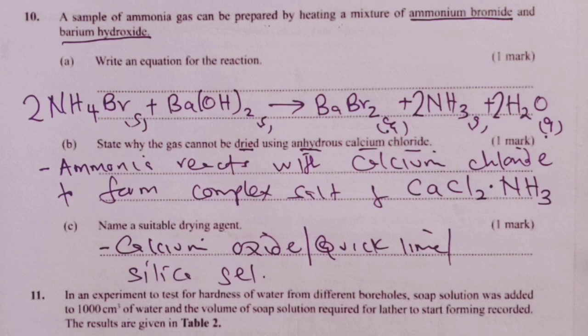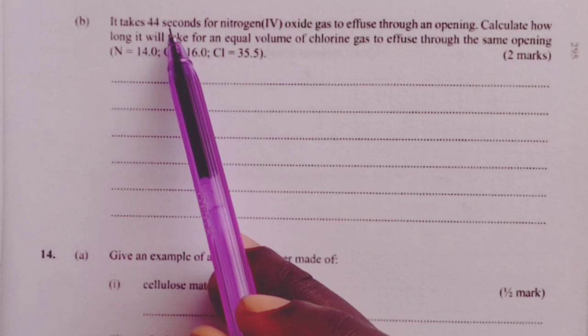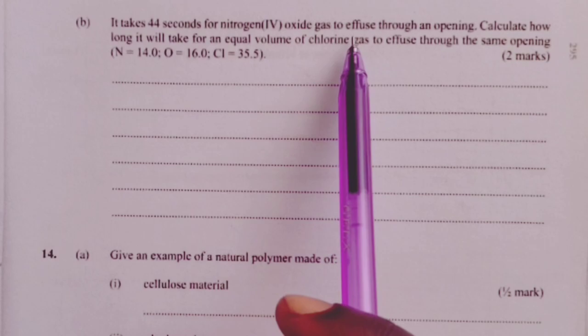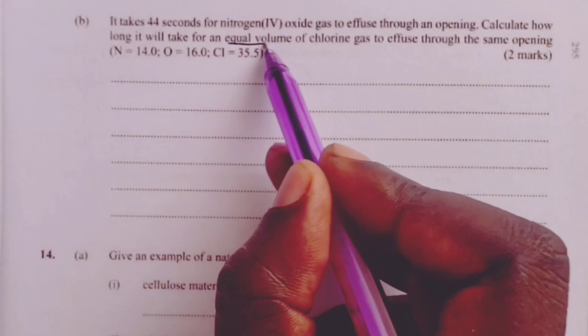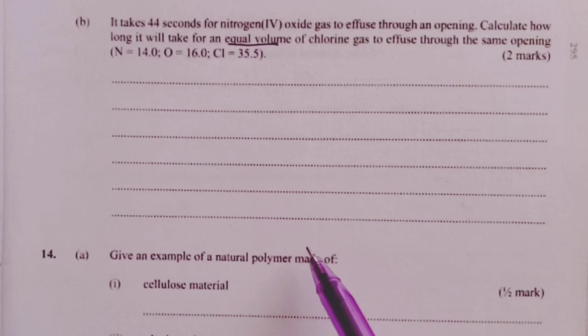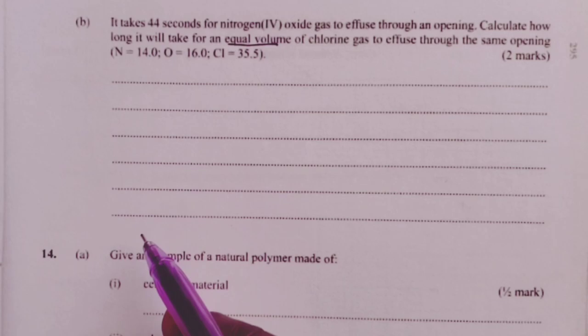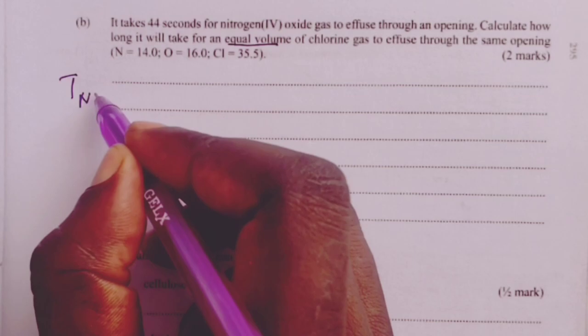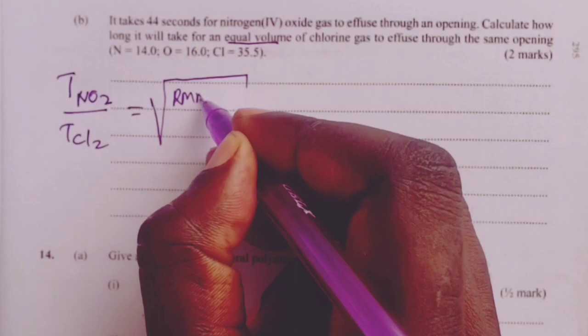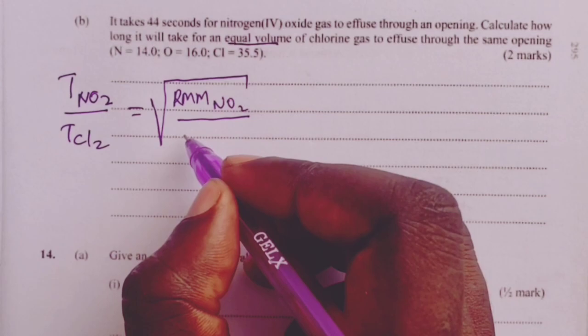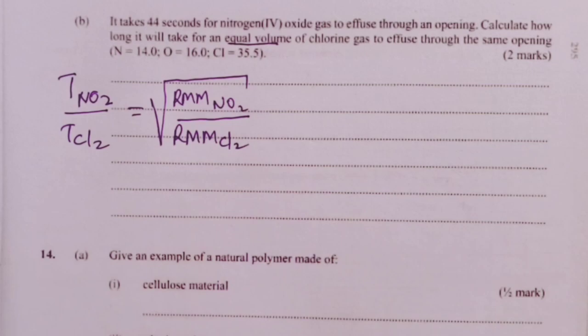We proceed to question number 13, part B, which asked us about gas laws. It takes 44 seconds for nitrogen-4 oxide gas to effuse through an opening. We are asked to calculate how long it will take an equal volume of chlorine gas to effuse through the same opening with the relative atomic masses given as additional information. This is a question asking on Graham's law of diffusion and therefore, we would go straight to the formula that relates time to the relative molecular masses. I want you to take note of the positioning of my gases in question. That would be the correct formula.